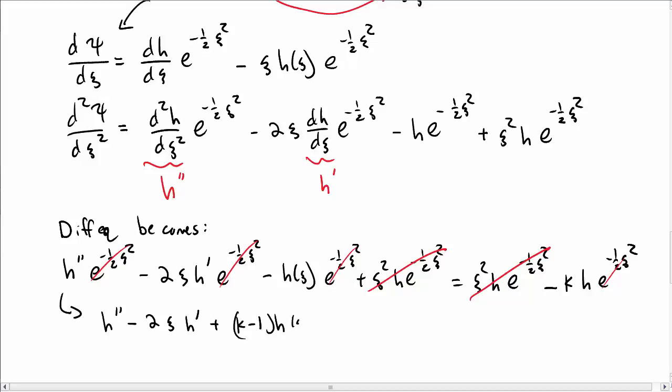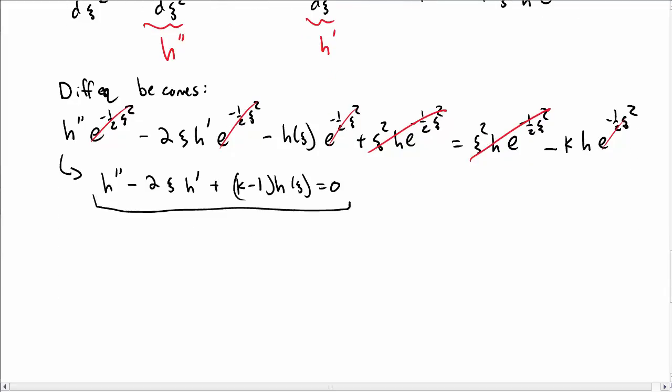Okay, so this can be rewritten in a slightly cleaner form: H'' - 2ξH' + (K-1)H = 0. Is this really any better? It still doesn't look like a differential equation we know how to solve.